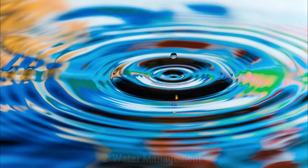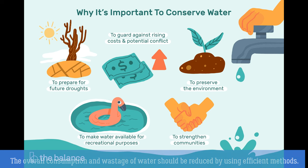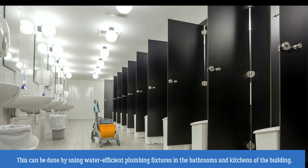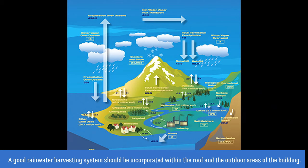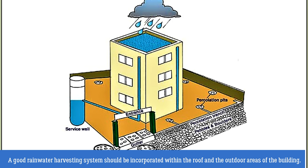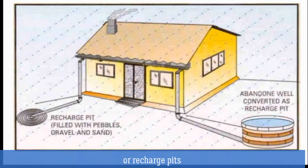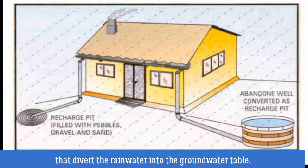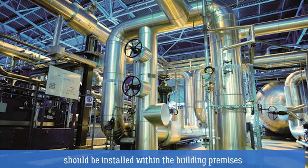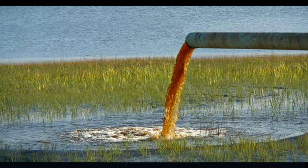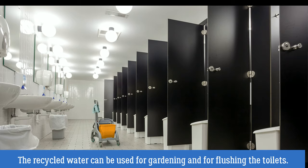Water management: the overall consumption and wastage of water should be reduced by using efficient methods. This can be done by using water-efficient plumbing fixtures in the bathrooms and kitchens. A good rainwater harvesting system should be incorporated within the roof and outdoor areas. The design should incorporate recharge trenches or recharge pits that can divert rainwater into the groundwater table. A wastewater recycling plant should be installed within the building premises, and the recycled water can be used for gardening and flushing toilets.